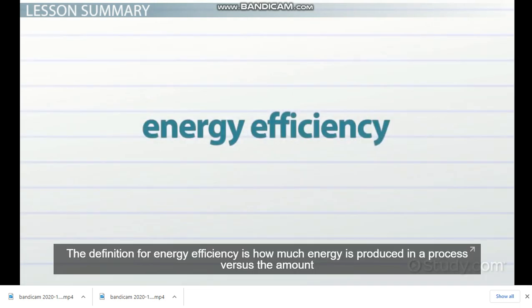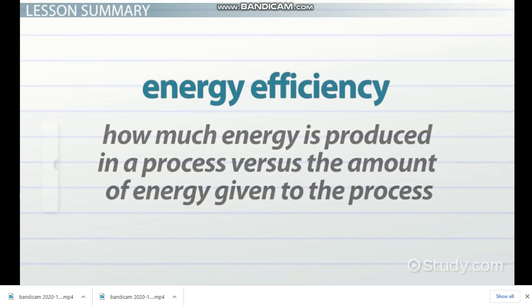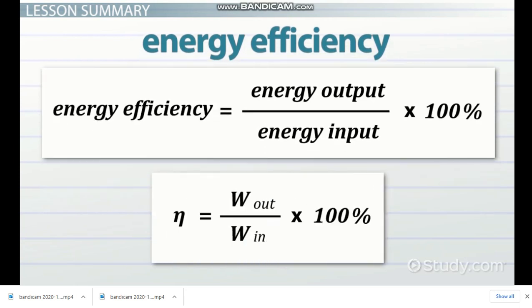The definition for energy efficiency is how much energy is produced in a process versus the amount of energy given to the process. The formula is, as you recall, energy efficiency equals energy output divided by energy input all times 100%, which can be written as eta equals W sub out divided by W sub in all times 100%.